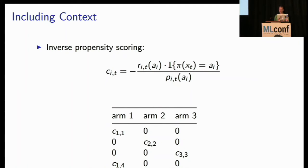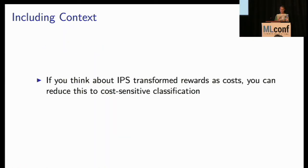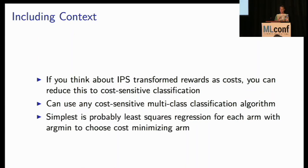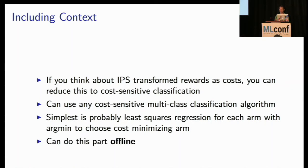So if you think about this inverse propensity score transformed rewards as costs, you can reduce this to cost-sensitive classification. You can use any cost-sensitive multi-class classification algorithm. And the simplest is probably least squares regression for each arm and an argument to choose the cost-minimizing arm. So but the really cool thing is you can do that classification offline, and that's what turns this from a fairly intractable problem into something that most companies have the infrastructure already set up to do.